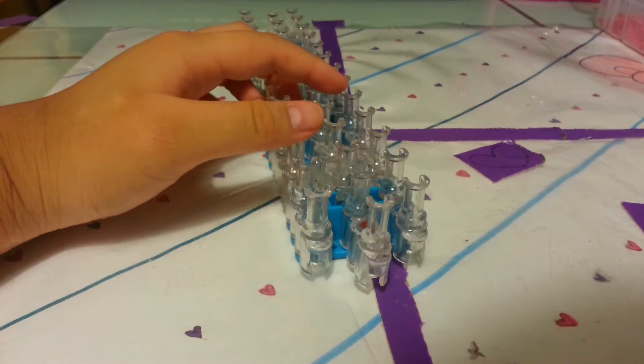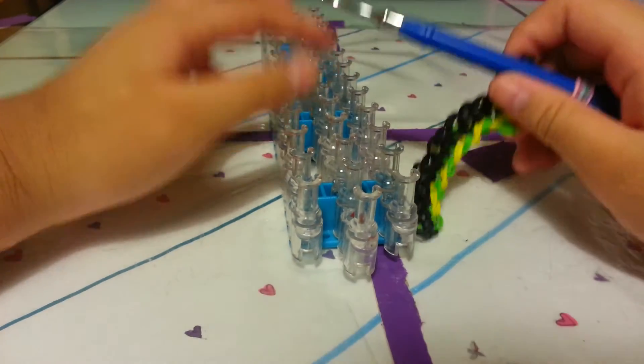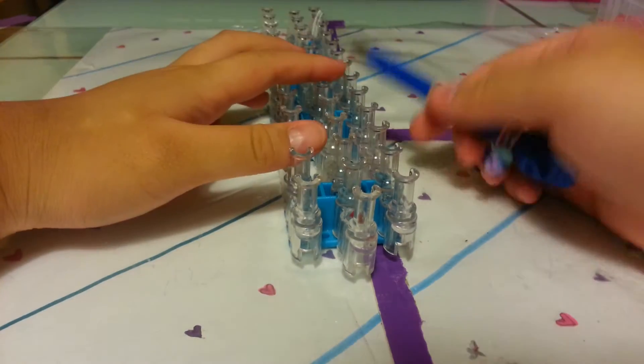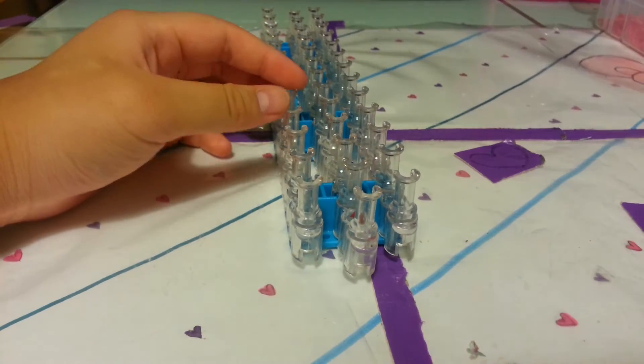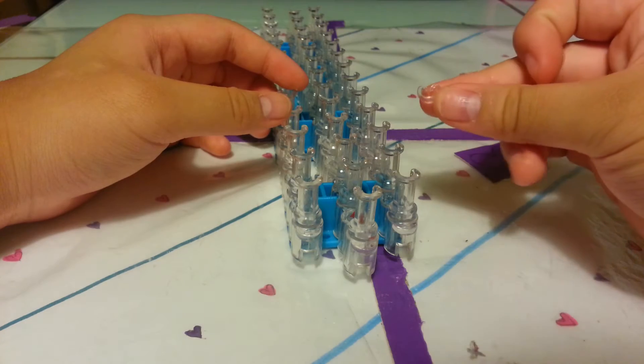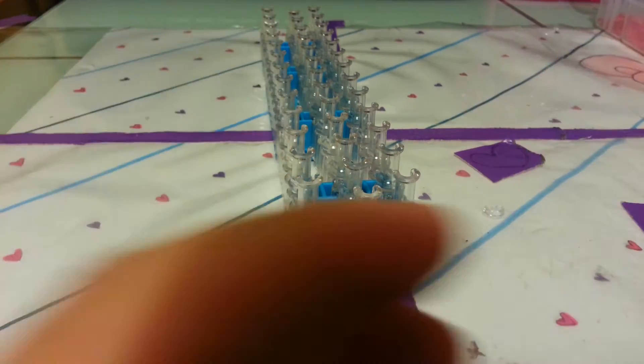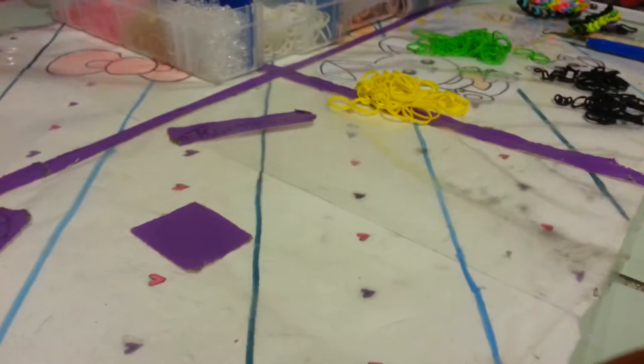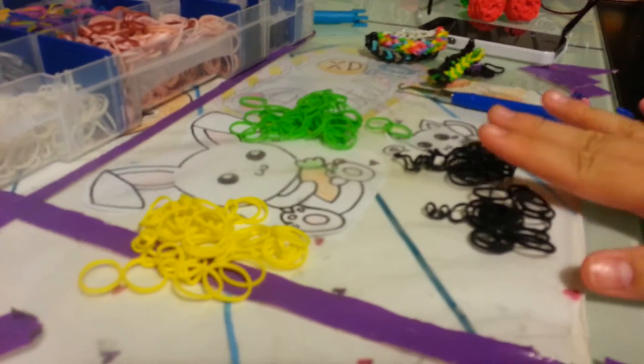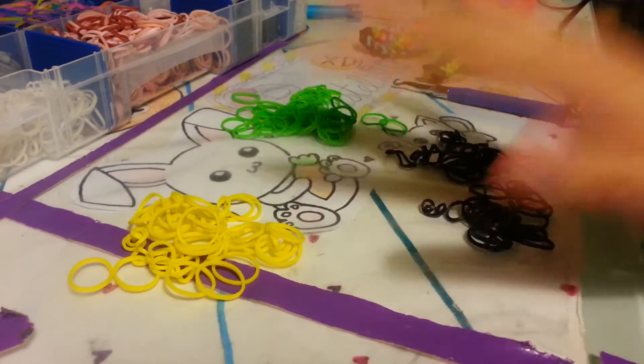So you need a loom, you're going to need a hook, you're going to need a clip - I'm using a C-clip today - and you're going to need as many bands as you like. I'm using black, green, and yellow.